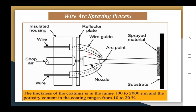The second type is arc spraying, which uses an electric arc as the source of heat. A DC power supply unit feeds two consumable wires, and at the point of contact between the wires, an arc is generated. This arc melts the wire material, and compressed air is then used to break the molten material into droplets, which are sprayed onto the surface of the substrate.